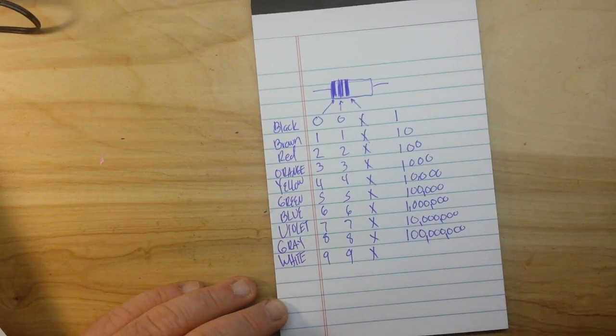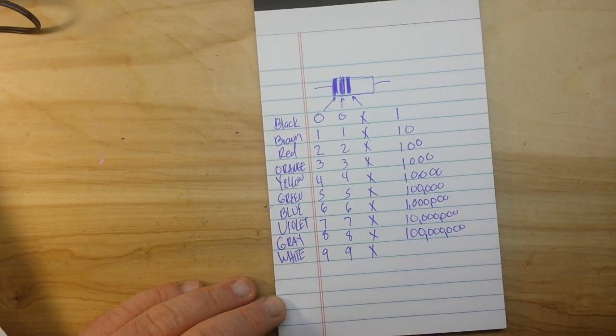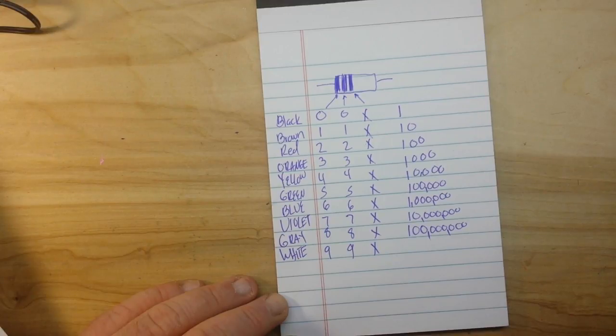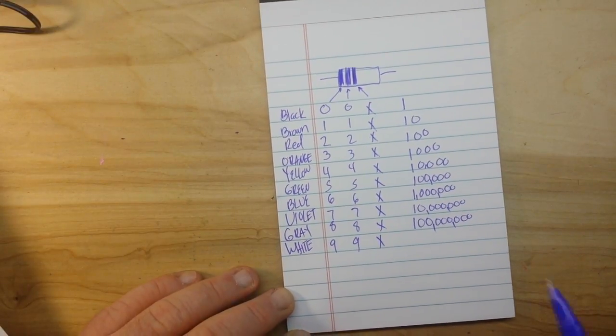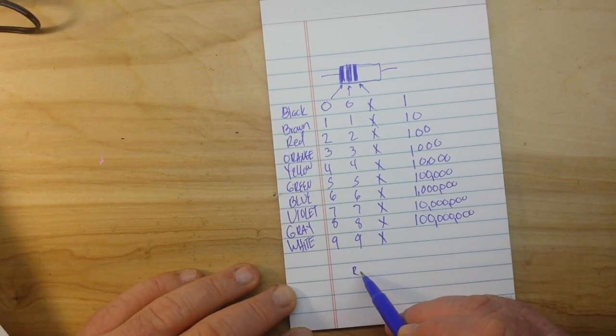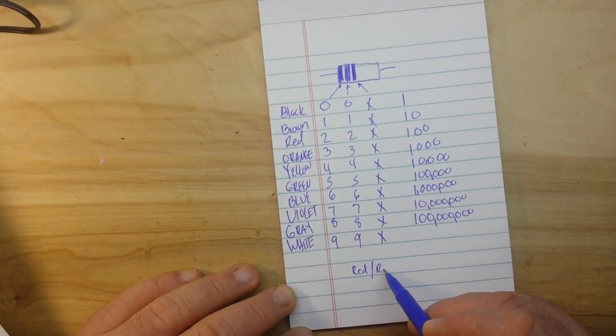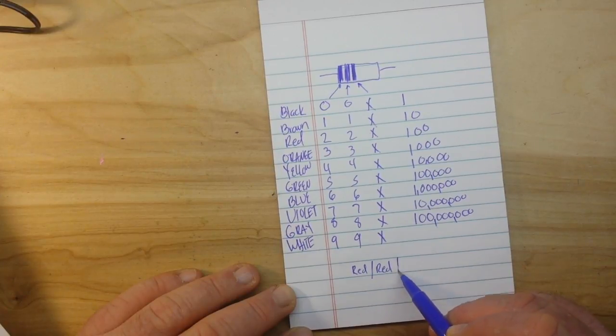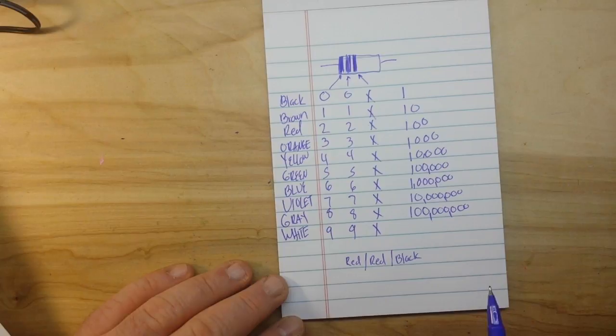So our bands go like this, and it's pretty easy to figure out how to do it from here. Let's say you have a resistor that is red, red, black. All right, take a second and do the math.